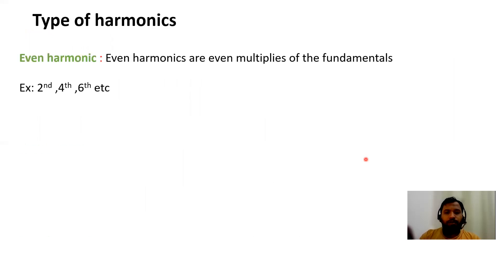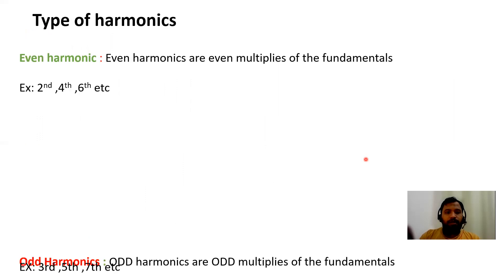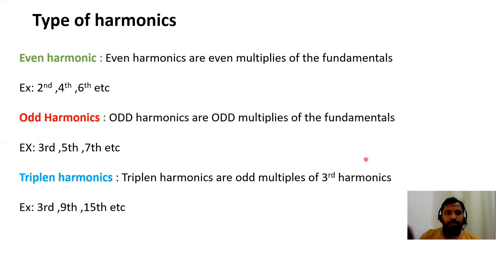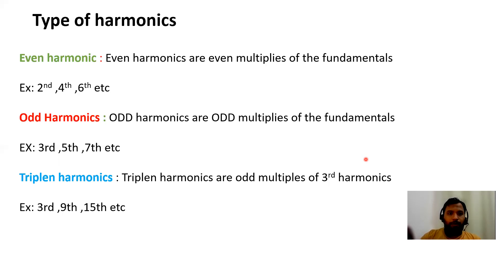What are the types of harmonics? Harmonics have even harmonics, odd harmonics, and triplen harmonics. Even harmonics are even multiples of the fundamental frequency — multiplying by even integers like 2, 4, 6, 8. Odd harmonics are multiples of odd integers like 3, 5, 7, 9. Triplen harmonics are multiples of three — 3, 9, 15 — and are called triplen harmonics.